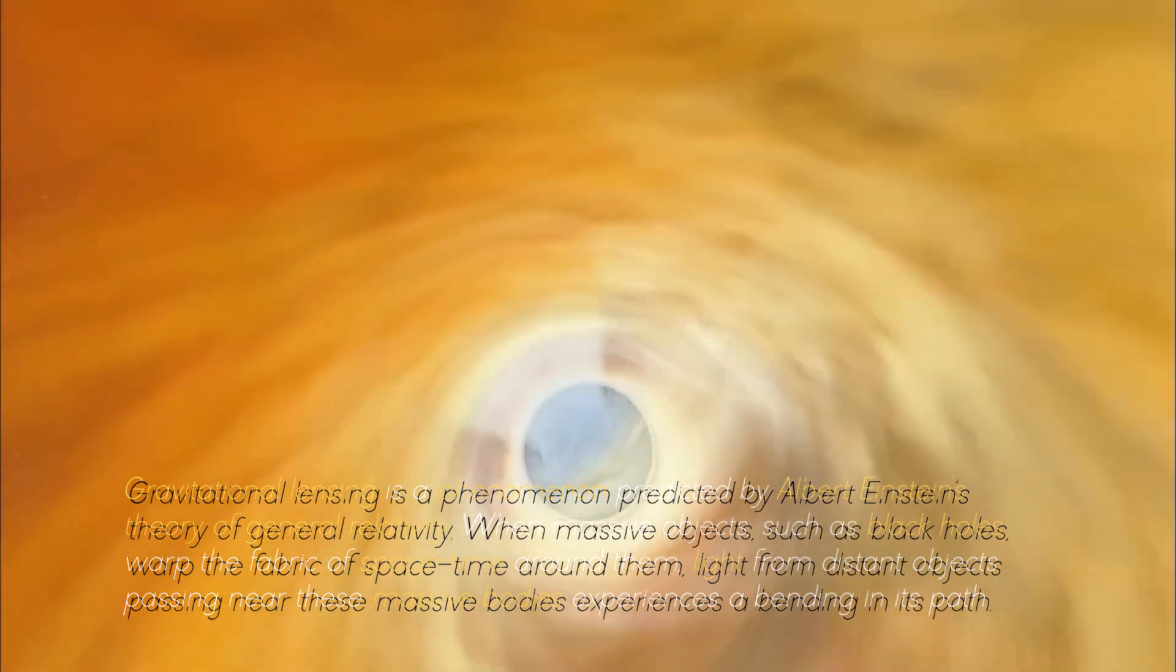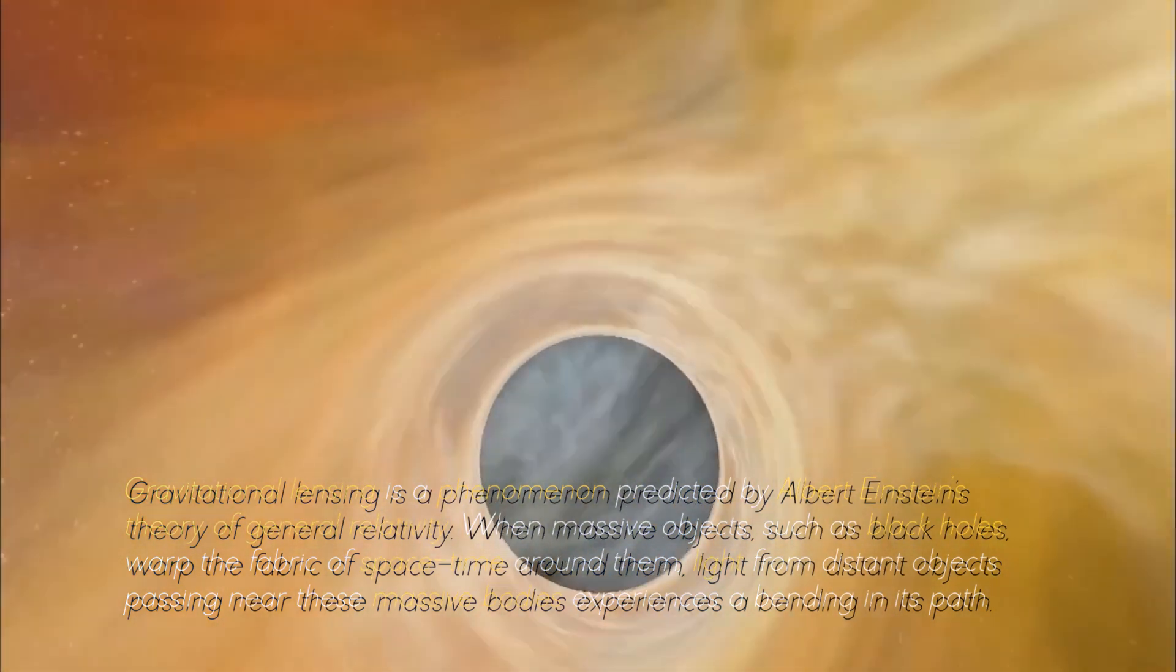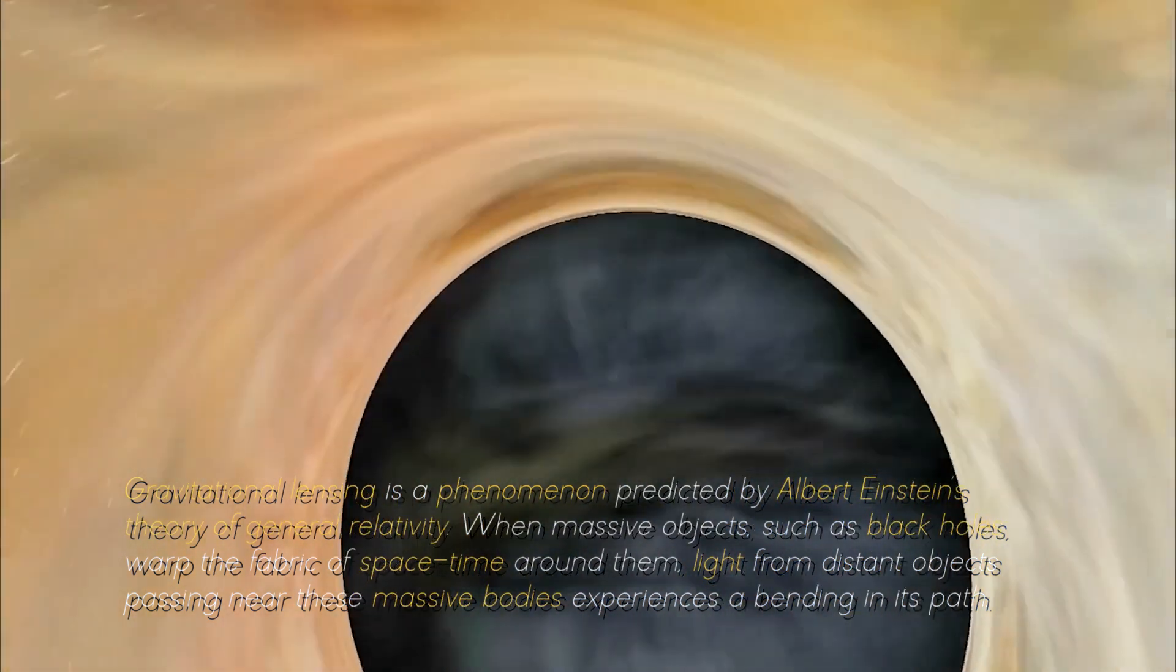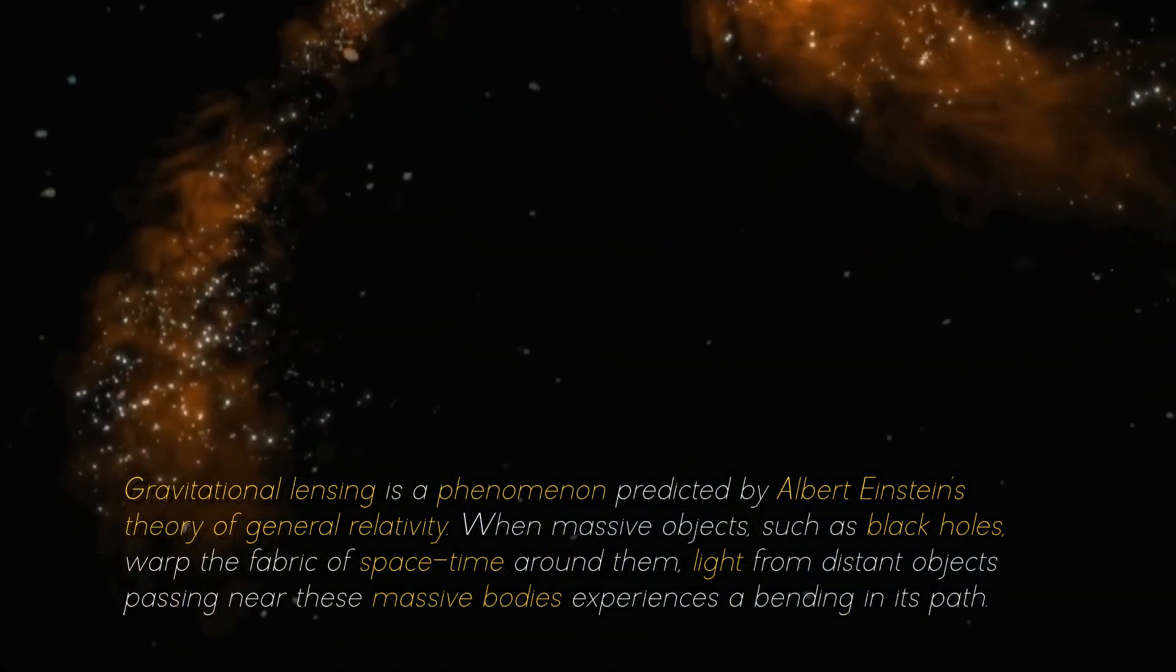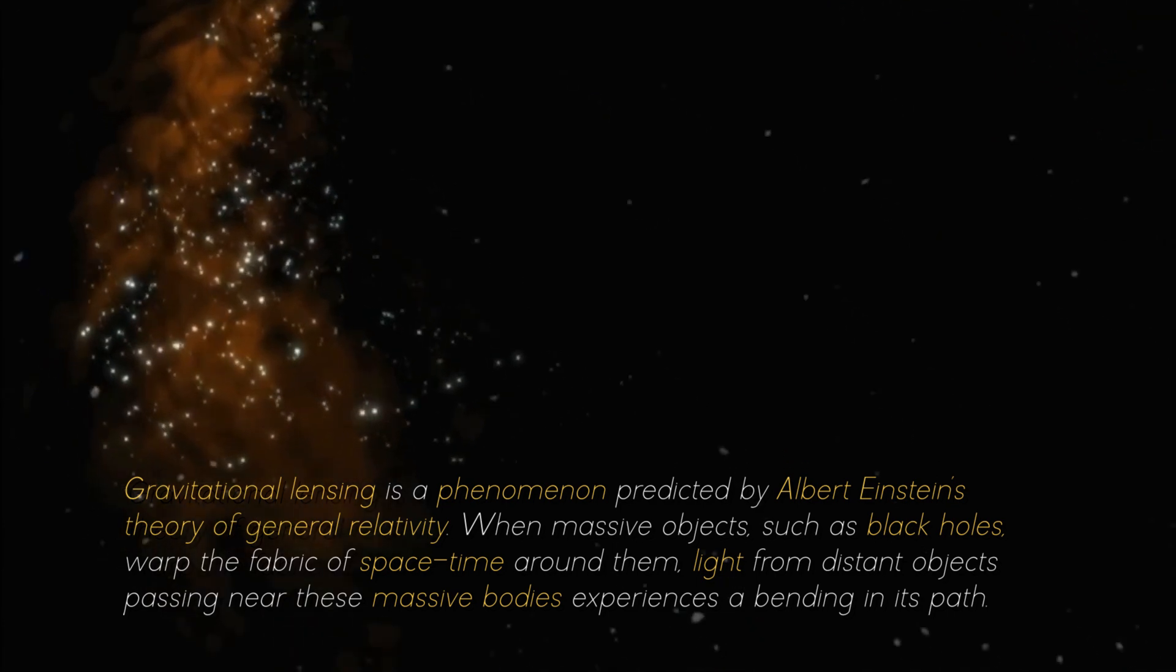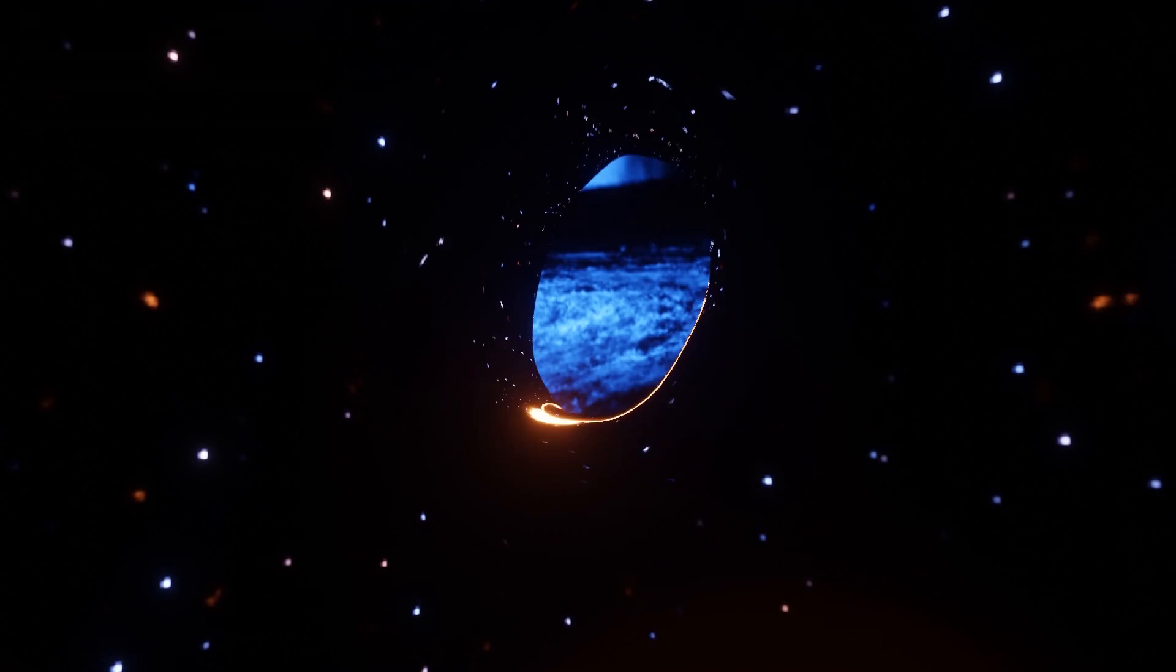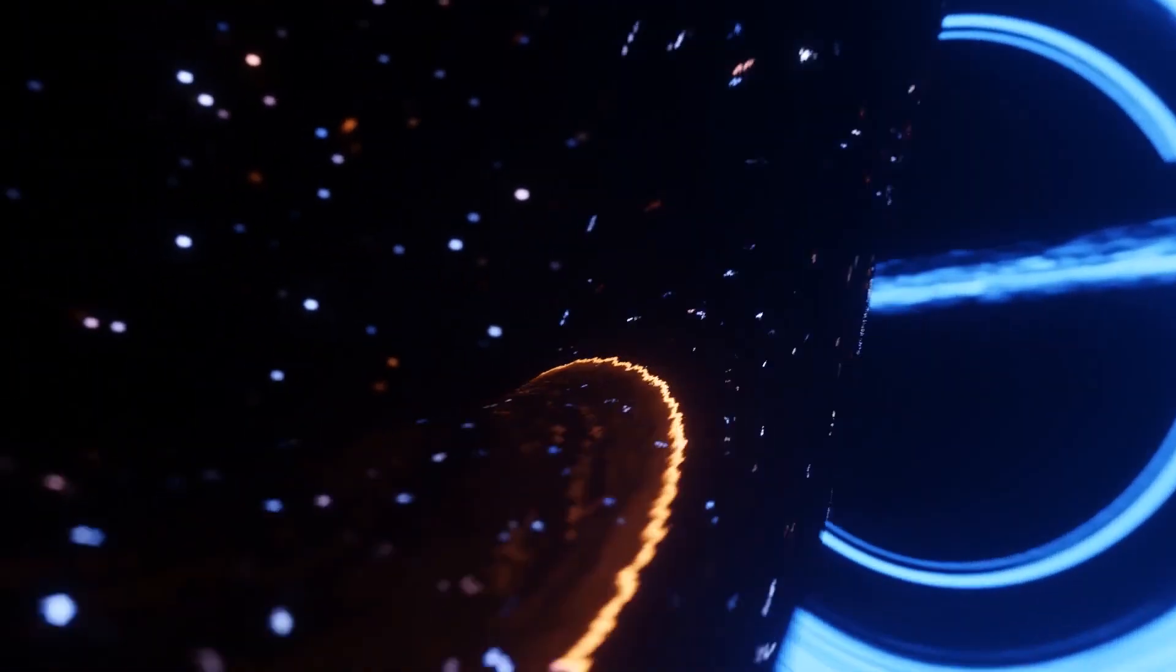Gravitational lensing is a phenomenon predicted by Albert Einstein's theory of general relativity. When massive objects, such as black holes, warp the fabric of space-time around them, light from distant objects passing near these massive bodies experiences a bending in its path. This results in a visual distortion or magnification of the object's image.